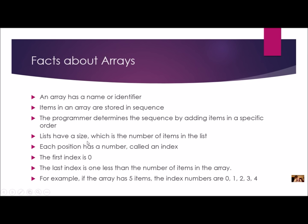Arrays have a particular size, which is the number of items in the list. Each item is in a particular position, and this position has a number called an index. The first index is always zero — it doesn't matter how big or small the array is. The last index is always one less than the number of items. For example, if you have five items, the first index is zero, so the last index is going to be four.